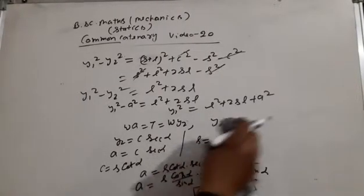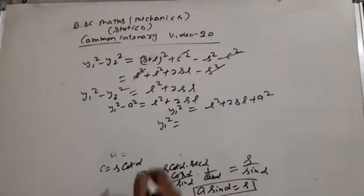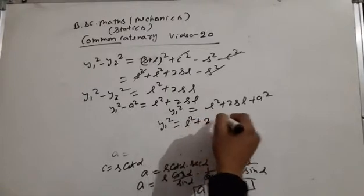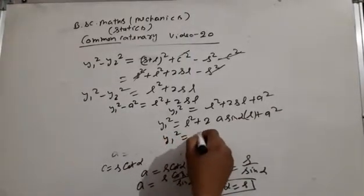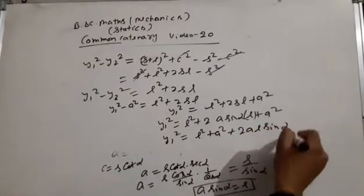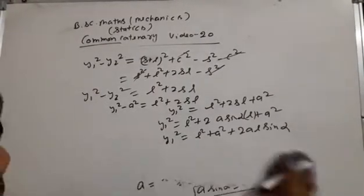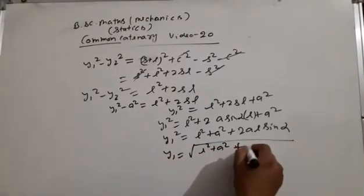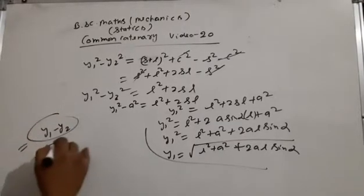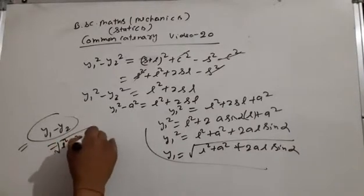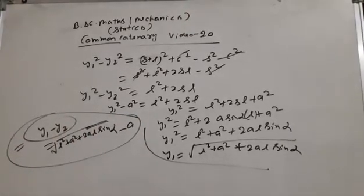Now substituting y1 squared: y1 squared equals l squared plus 2sl plus a squared. Putting s equal to a sin alpha gives y1 squared equals l squared plus a squared plus 2al sin alpha. Since y2 equals a, y1 equals under root l squared plus a squared plus 2al sin alpha. Therefore the vertical distance y1 minus y2 equals under root l squared plus a squared plus 2al sin alpha minus a.